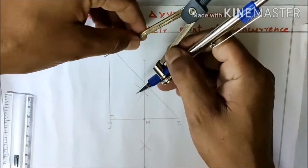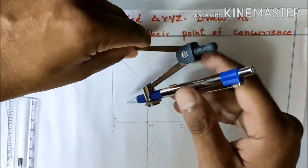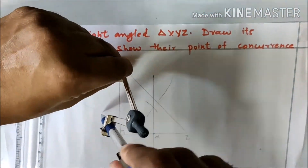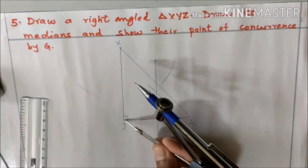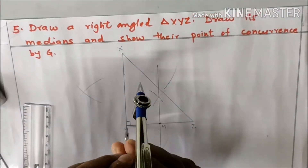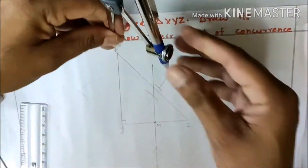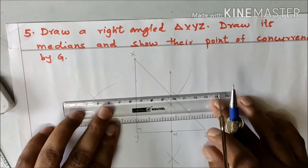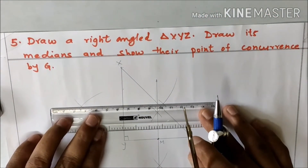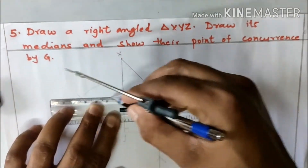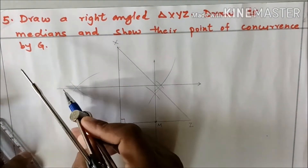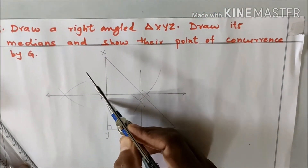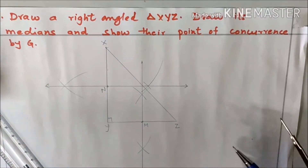Similarly, we will find the midpoint of side XY. Take the length more than half and make arcs up and down. Place the compass at Y with the same length, make arcs up and down — extend a little if needed. Join the point of intersection. This is the bisector of side XY. Let this midpoint be N.